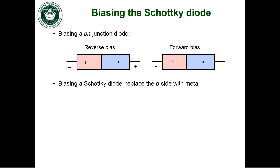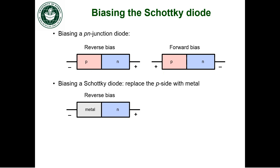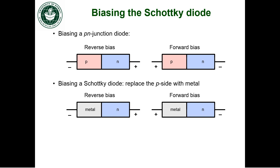In order to bias a Schottky diode in reverse or forward bias, all we're going to do is have the same kind of structure, but we're going to replace the P side in both cases with our metal. So this is what the reverse bias will look like on an N-type Schottky diode — the more positive potential is on the semiconductor side, the N-type semiconductor side. And the opposite for forward bias: in forward bias, the positive potential, or the higher potential, is going to be on the metal side.